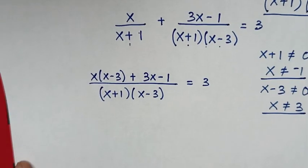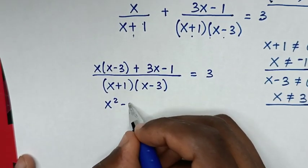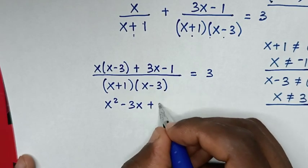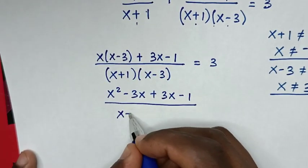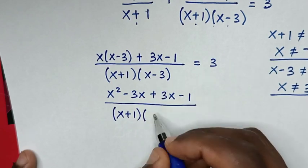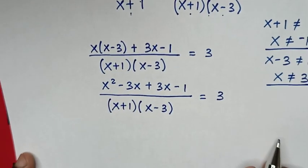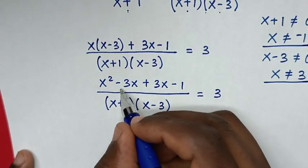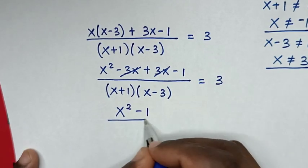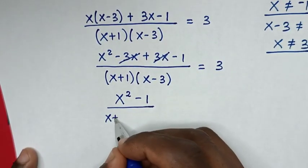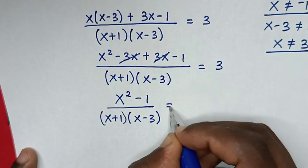Expanding the numerator: x times x is x squared, x times negative 3 is negative 3x, then plus 3x, then minus 1. The negative 3x and plus 3x cancel, so the numerator simplifies to x squared minus 1, giving (x squared minus 1) over (x plus 1)(x minus 3) equals 3.